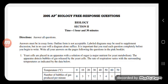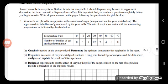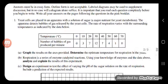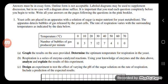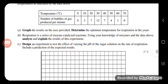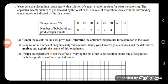Question number one: cells are placed in an apparatus with a solution of sugar and nutrients for yeast metabolism. The apparatus detects bubbles of gas released by the yeast cells. The rate of respiration varies with surrounding temperature as indicated by the data below. Temperatures range from 0 to 70 degrees Celsius, and the number of bubbles has an optimum around 30 degrees Celsius. Graph the results on the axes provided and determine the optimum temperature for respiration in the yeast.